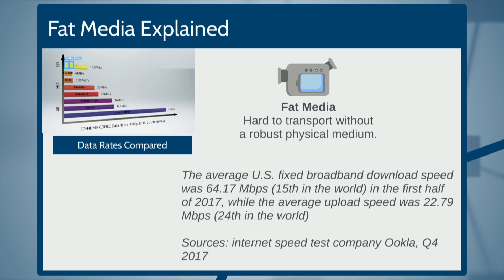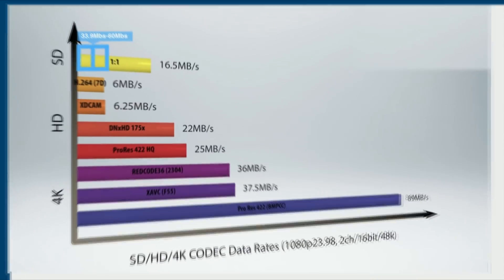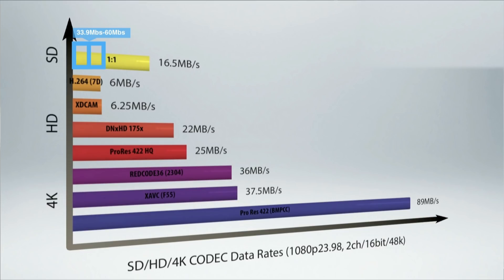Going a bit deeper on fat media: the average US data rate for a home user is 64 megabits a second download speed — 15th fastest in the world. That blue square at the top of my chart represents your max bandwidth at about 60 megabits a second. That's barely enough to handle a stream of H.264 from a 7D or an XDCAM stream. So if you're trying to do multicam or edit high-res like ProRes RAW remotely, that's not going to fit down the pipes we currently have.